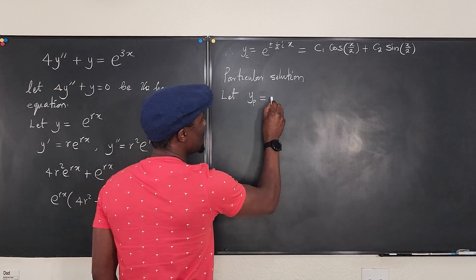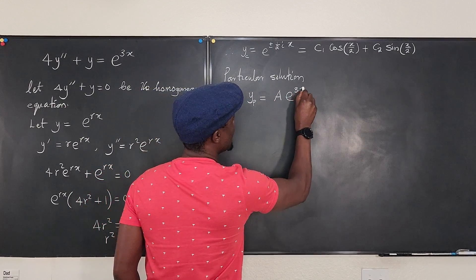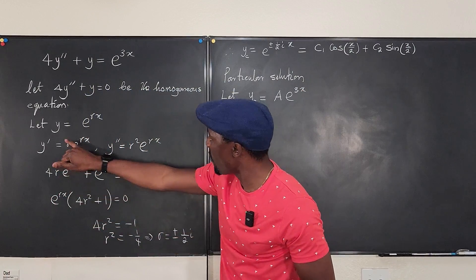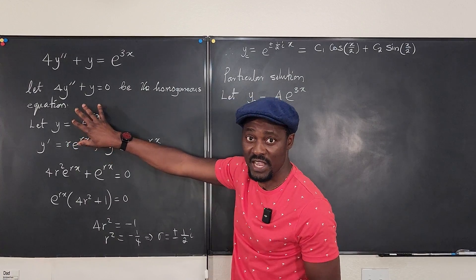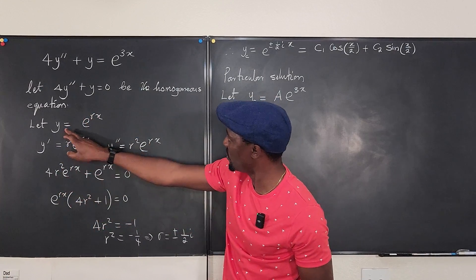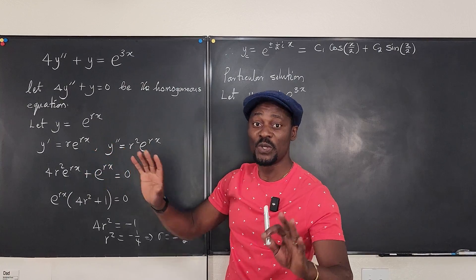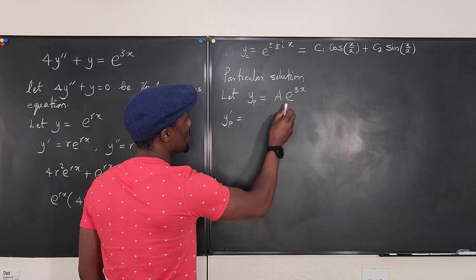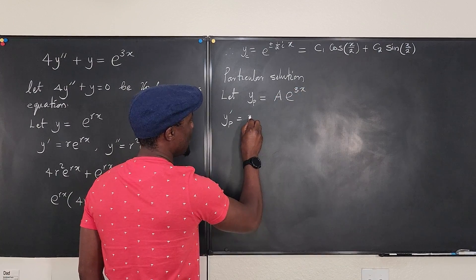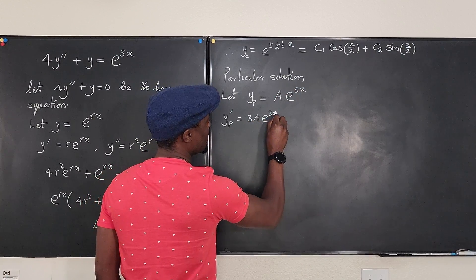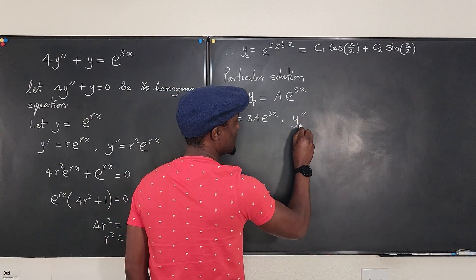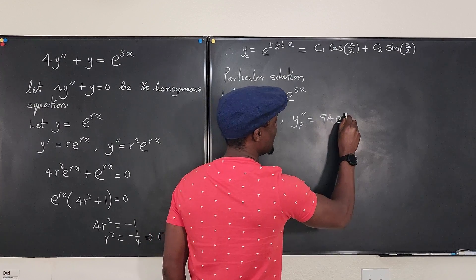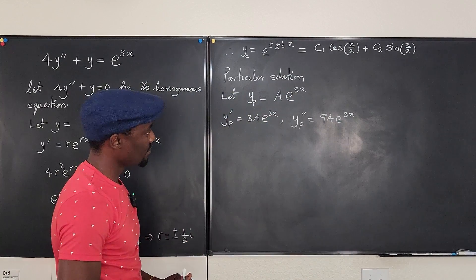We assume the particular solution has the form yp = Ae^(3x). Differentiating: yp' = 3Ae^(3x), and differentiating again: yp'' = 9Ae^(3x).